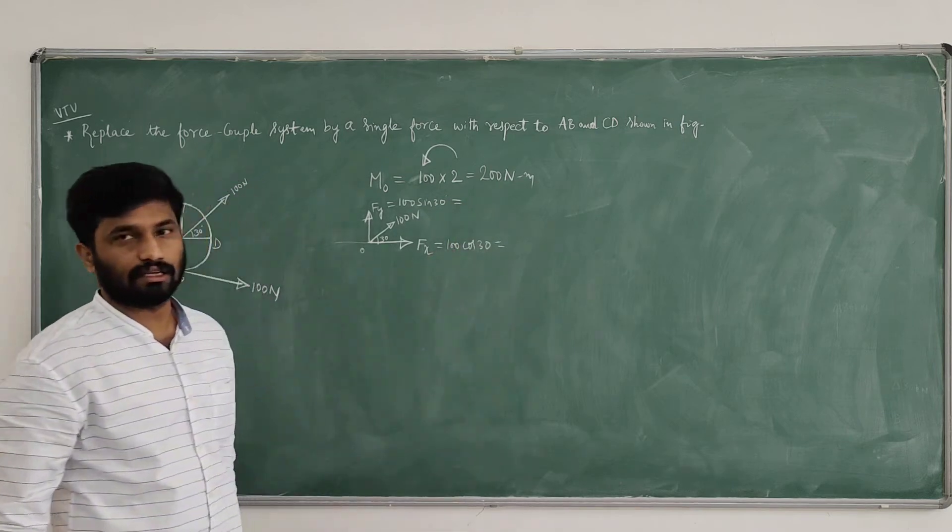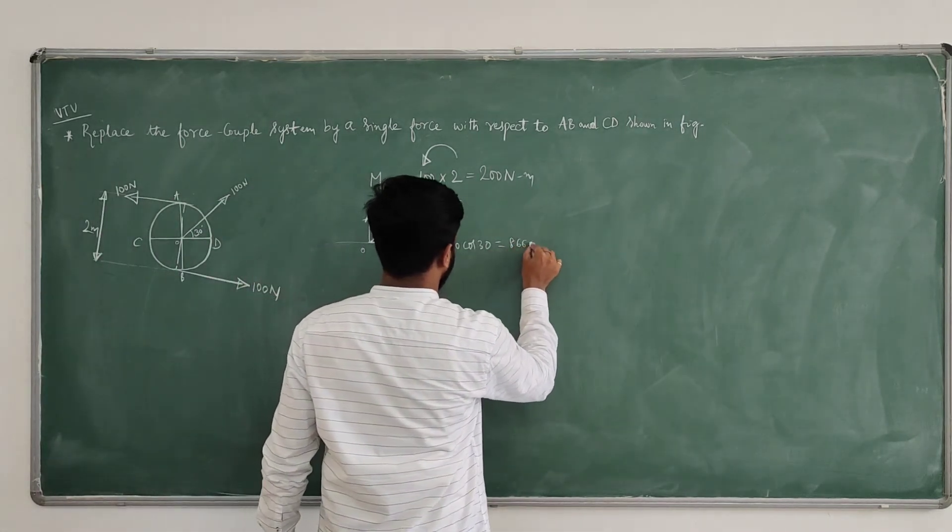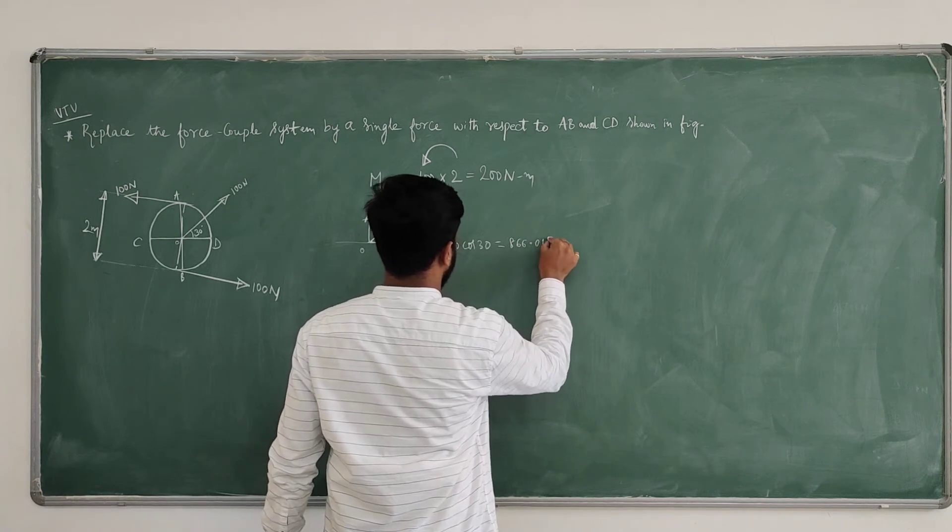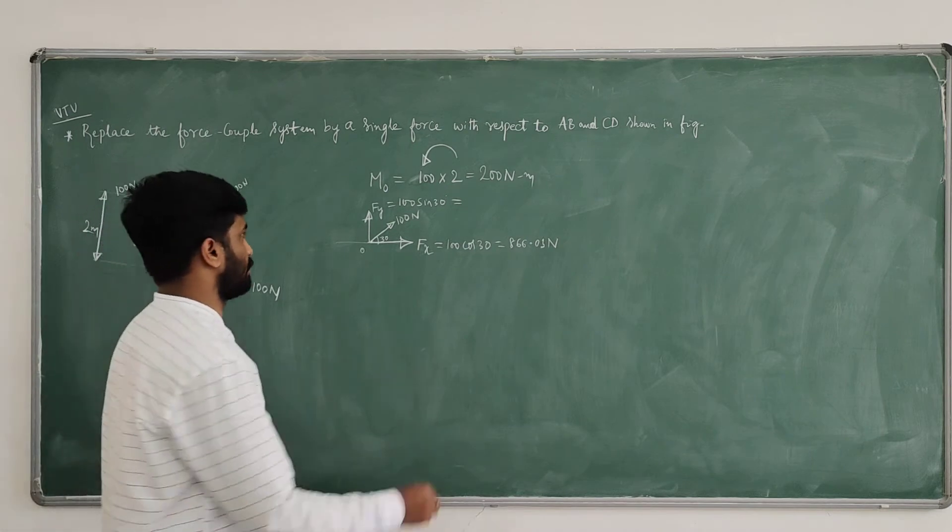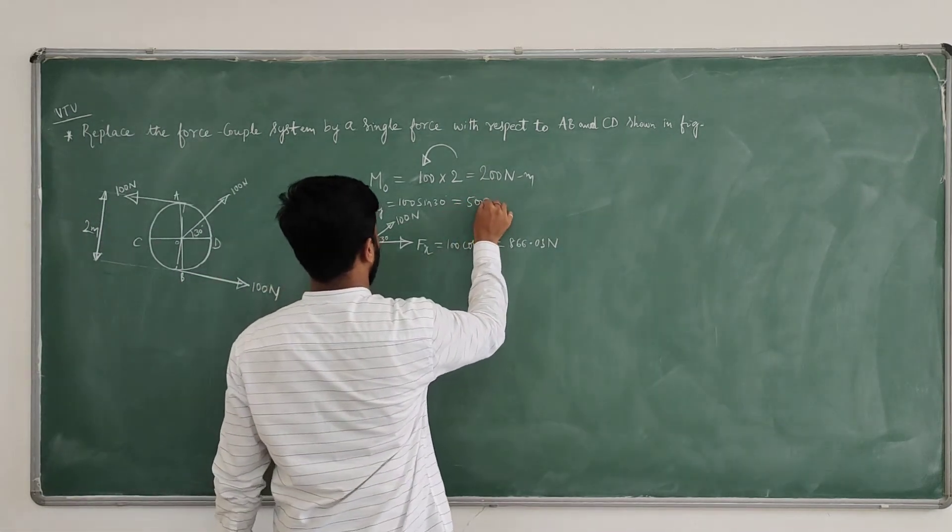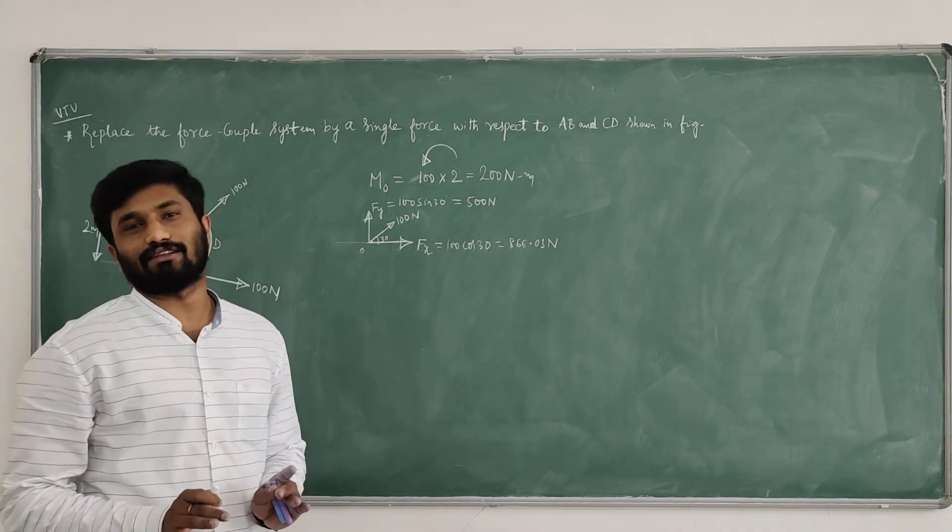And Fy value is 100 sin 30. What is 100 cos 30? 86.603, 86.603 newton. What is sigma Fy? 50 newton. 100 sin 30 is 50 newton. Now we can easily compute using Varignon's theorem of moment.